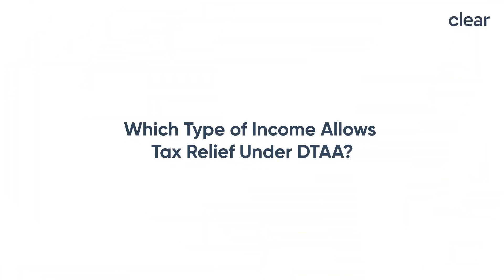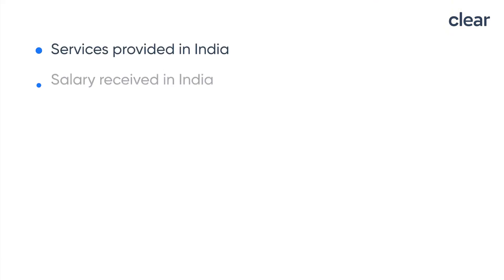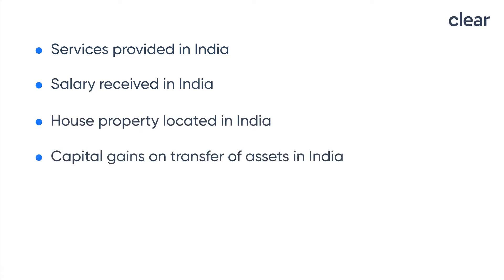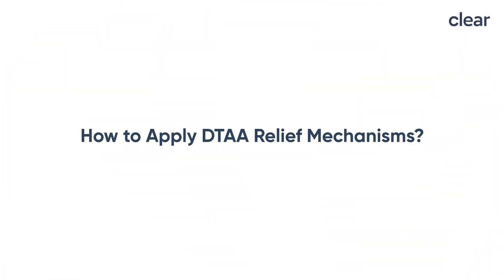There was a need for an agreement between countries to avoid this kind of double taxation. Under the Double Taxation Avoidance Agreement, NRIs don't have to pay tax twice on the following incomes: salary received in India, income from services provided in India, house property located in India, capital gains on transfer of assets in India, fixed deposits in India, and savings bank accounts in India.